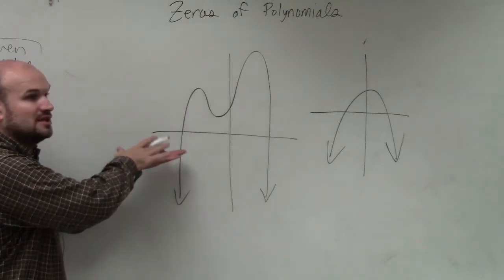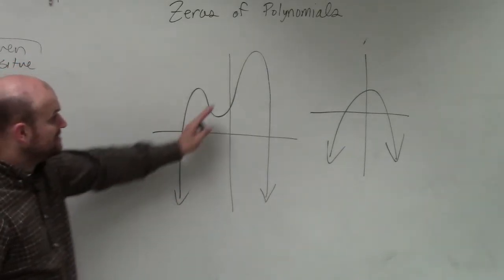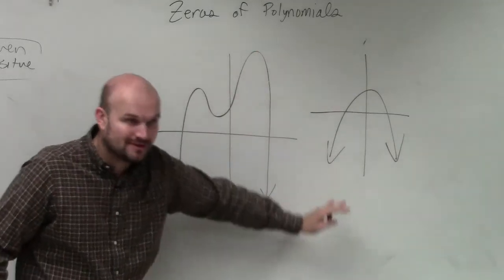As the graph goes to the left, they're doing what? Going down. Going down or falling, right? As we go to the right, the graph is falling.